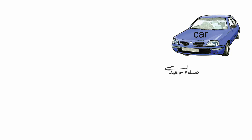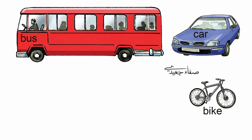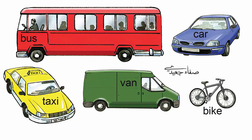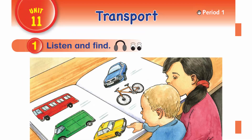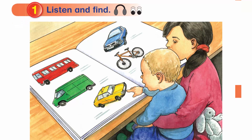Car, Bus, Bike, Van, Taxi. Unit 11, Period 1, Activity 1: Listen and find. What's this? It's a taxi. It's a bus. It's a van. It's a car. It's a bike.